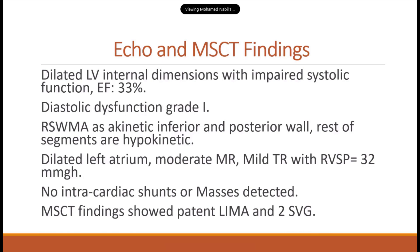Echo findings showed dilated LV internal dimensions with impaired systolic function. Ejection fraction was around 33%. Diastolic dysfunction grade 1, resting segmental wall motion akinesia of the inferior and posterior wall. Rest of segments were hypokinetic. Dilated left atrium, moderate mitral regurgitation, mild tricuspid regurgitation.